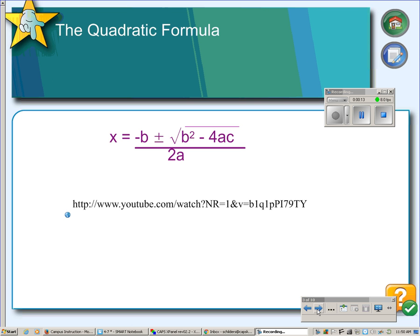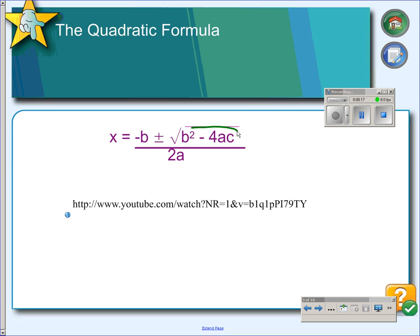Here's our quadratic formula again. The discriminant is just this part of the quadratic formula. You're not calculating the whole thing when you do the discriminant. You're just calculating the answer to b squared minus 4ac.